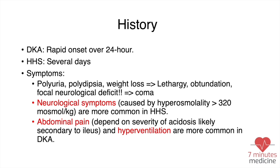Neurological symptoms caused by hyperosmolarity above 320 are common in HHS. Abdominal pain caused by acidosis and hyperventilation is more common in DKA. Clinically, HHS patients have more altered mental status, while DKA patients have more pain and hyperventilation.